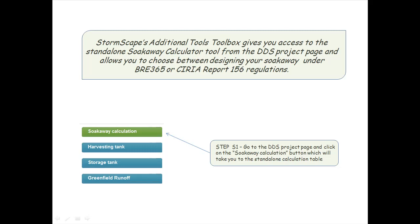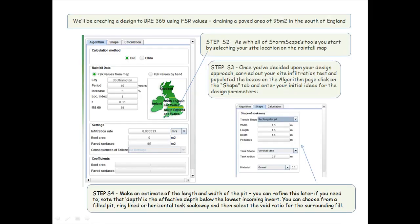Step 1: go to the DDS project page and click on the SoakAway calculation button, which will take you to the standalone calculation table. We'll be creating a design to BRE365 using flood studies report values, draining a paved area of 95 metres squared in the south of England.